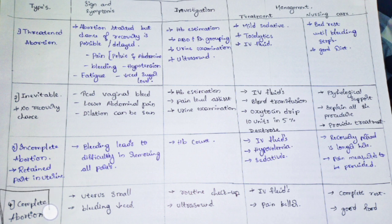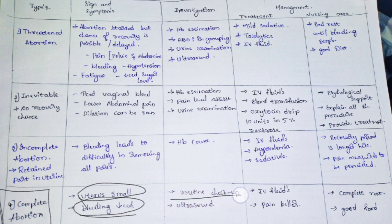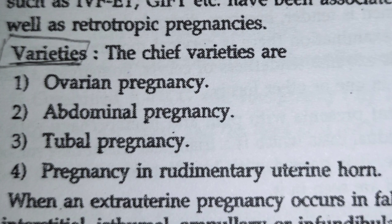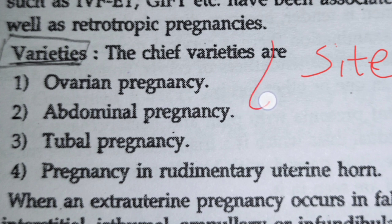Complete abortion: abortion has occurred and everything has been removed. The uterus opening will be small and bleeding very less. Treatment is not major — routine checkup, ultrasound to confirm nothing is left, IV fluid, and painkiller. Complete rest with good diet and support is enough for recovery. Abortion is classified not just by process but also by the site where it occurs.